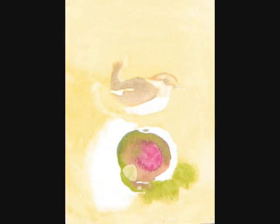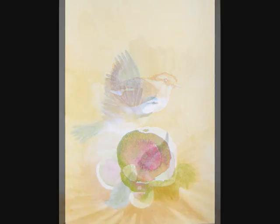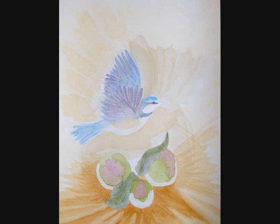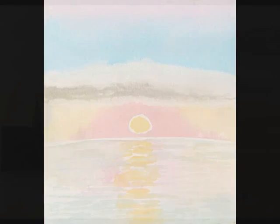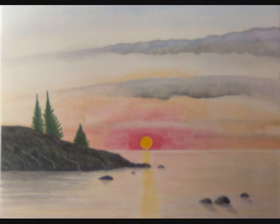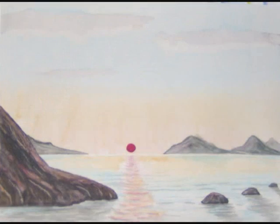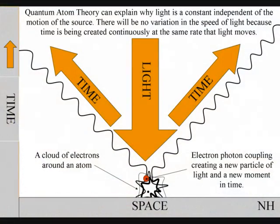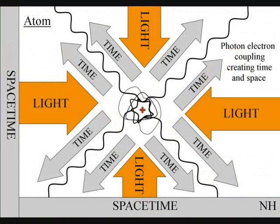This can also explain why light is so beautiful when it strikes an object. It is because we are looking at a moment of pure creation of time and space. Because this is a continuous process at the same speed that light moves, the expanding wave function of light between the atoms will always be a universal constant, independent of the motion of the source.